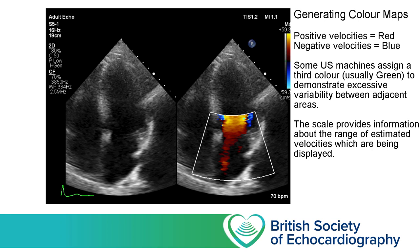So here we are in our apical 4 chamber view with two images side by side. On the left we have the plain 2D image, and on the right we have an identical image with a colour box overlaid. You can see from the ECG that the image is frozen at mid-diastole — towards the tail end of early diastolic filling. We can see a band of dark red becoming bright yellow blood leaving the left atrium and entering the LV. The scale on the right hand side indicates the ultrasound machine is estimating this blood is travelling in the order of about 50 cm per second as it crosses past the mitral valve annulus.